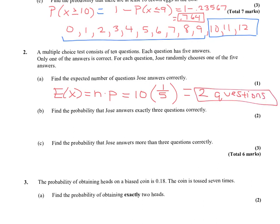Next, find the probability that Jose answers exactly three questions correctly. Since it's already confirmed as a binomial distribution, and it says exactly three, we use binomial PDF. In your graphing calculator: second distribution, binomial PDF, trials = 10, probability of success = 1/5, X = 3. That gives a probability of 0.201 (to three significant figures).